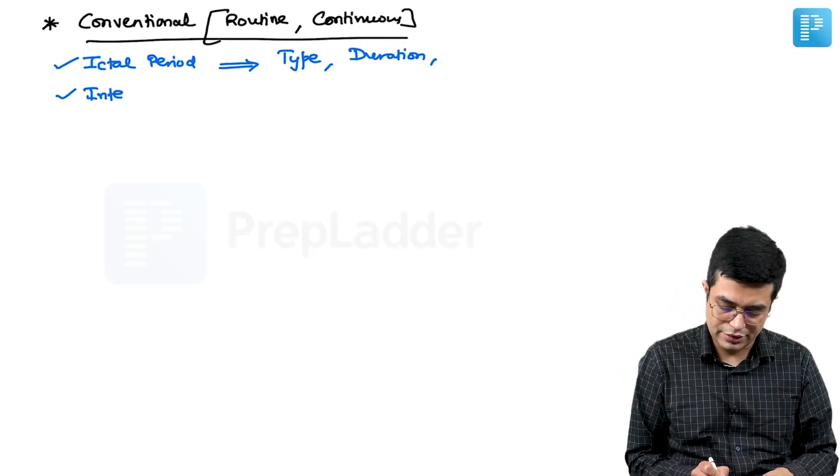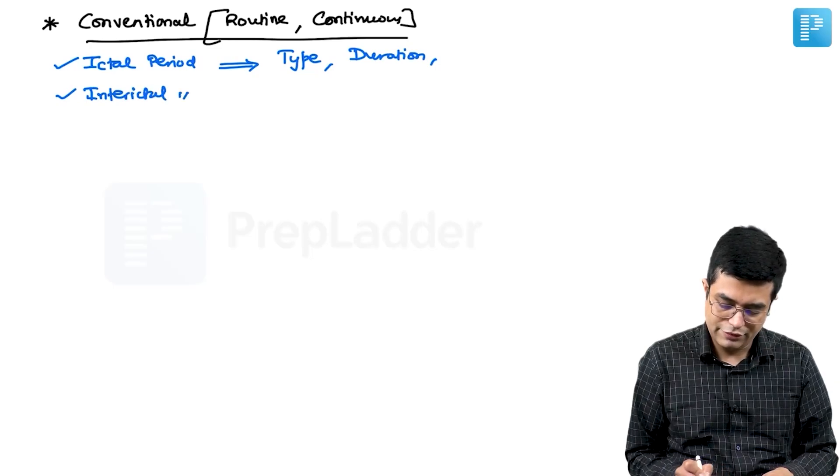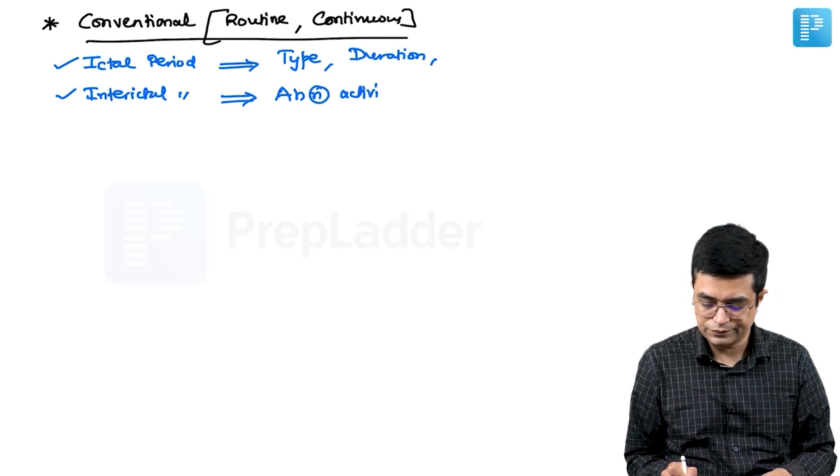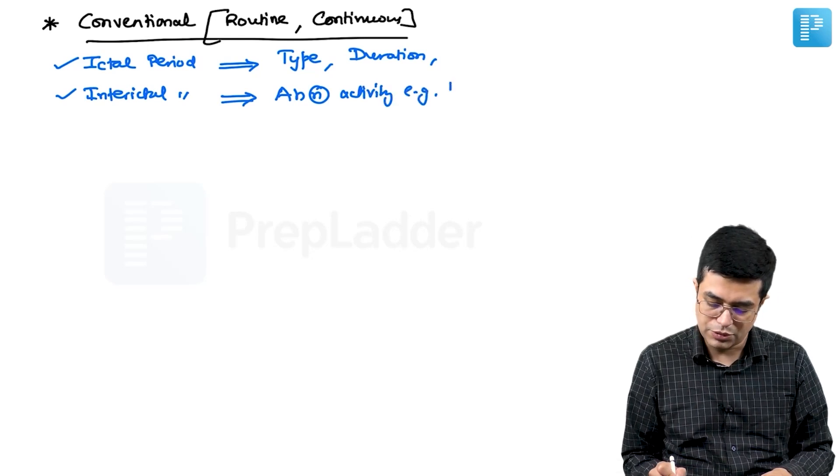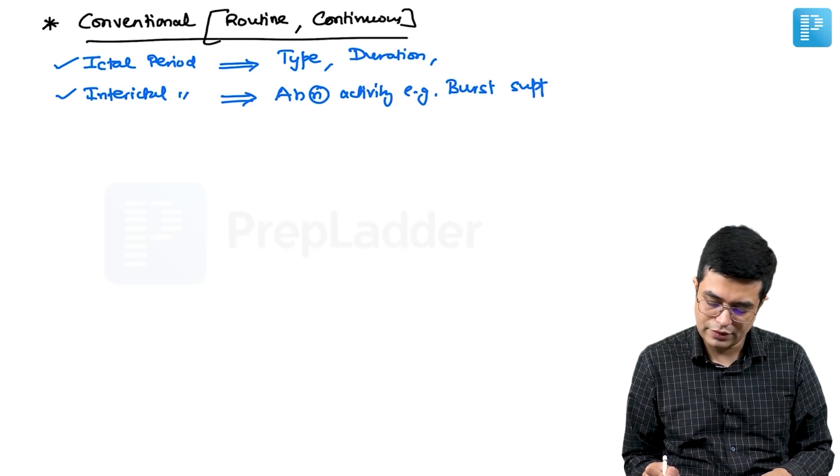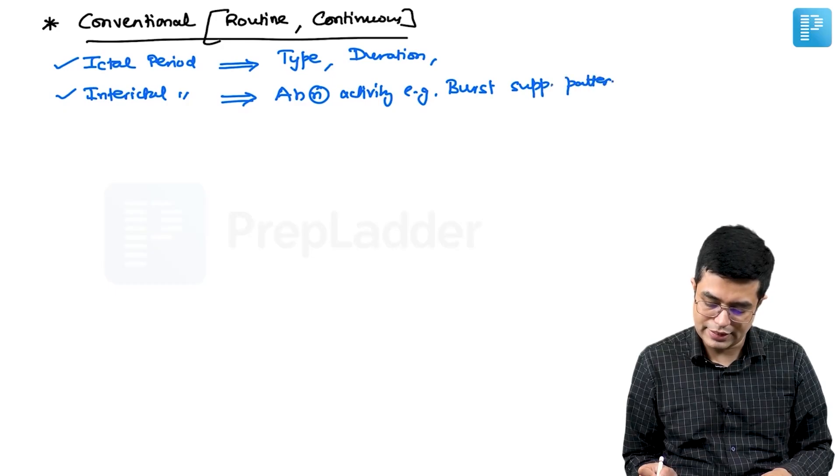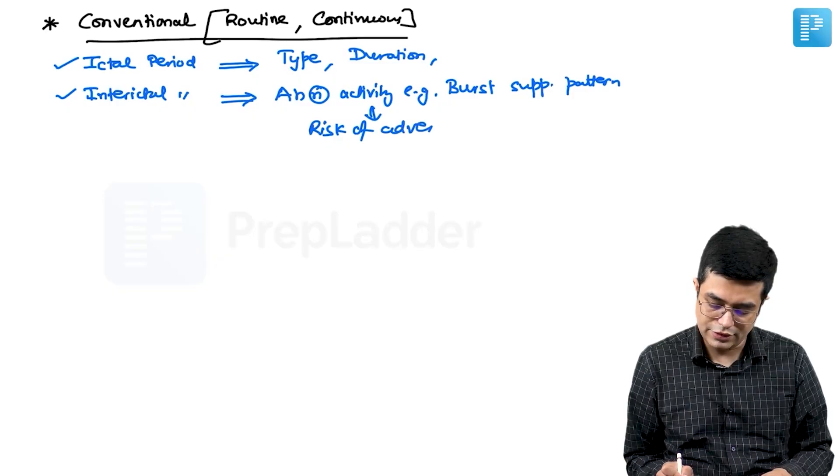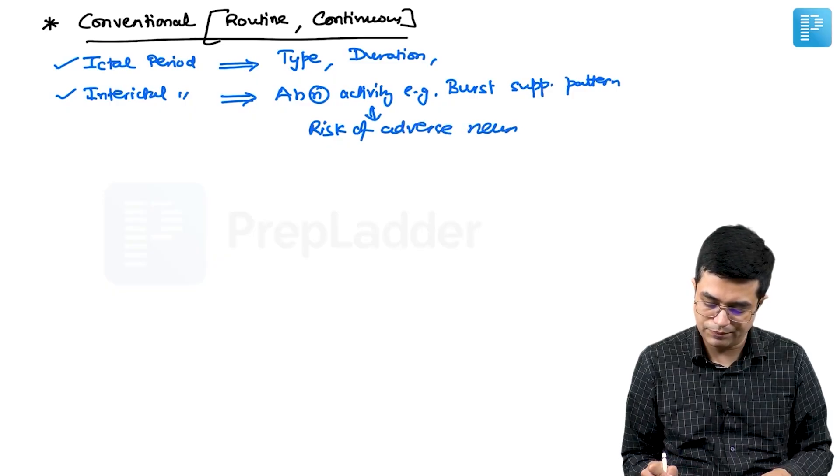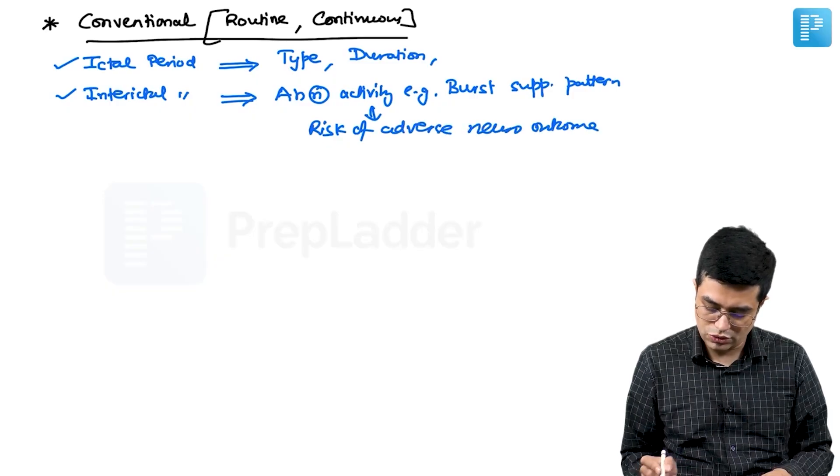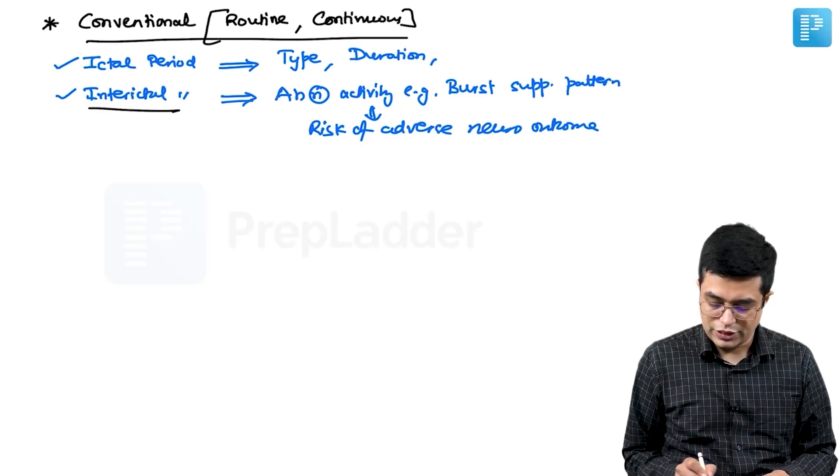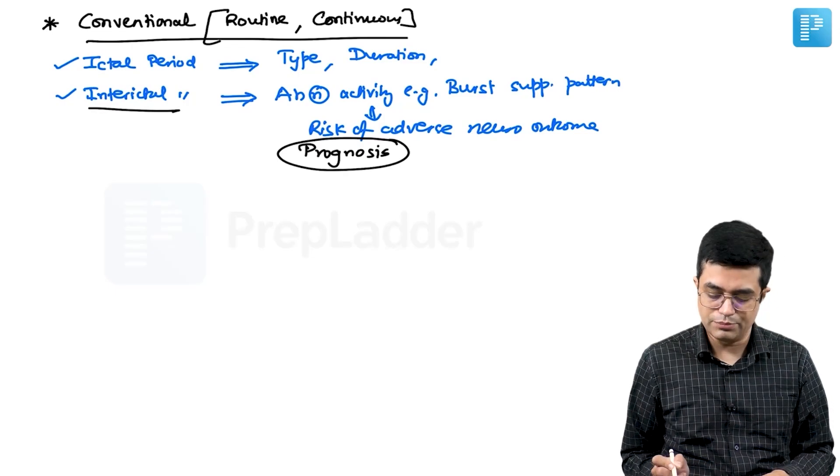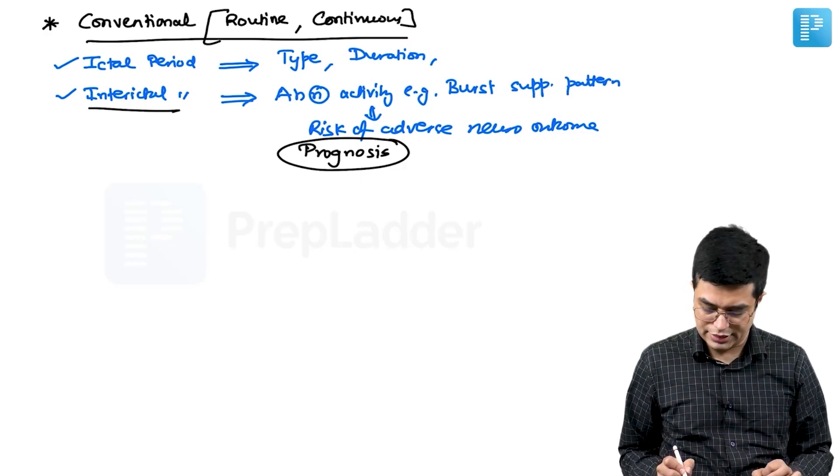Even in the inter-ictal period, if you find that there is abnormal electrical activity, for example, burst suppression pattern you find, this will indicate that there is a risk of adverse neurological outcome in the baby. And so, inter-ictal period EEG also tells you about prognosis effects over long term period in the child. That is why conventional EEG is needed.